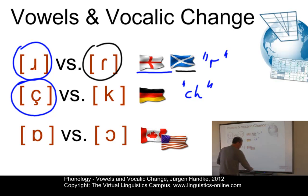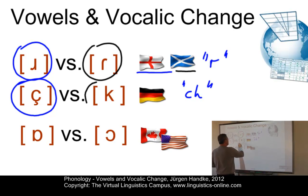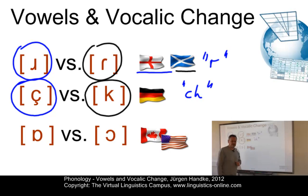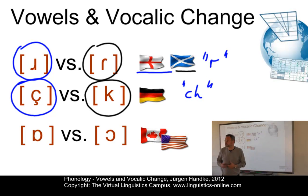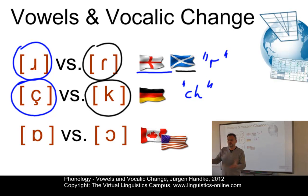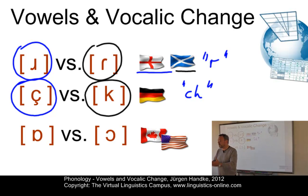Whereas in some selected variants of German, we might use a velar plosive, as in China or Chemie. So we have the choice between two variants in each case — an either/or, but nothing in between decision.